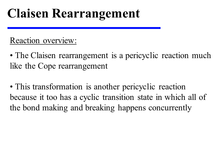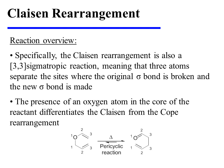The Claisen Rearrangement is a pericyclic reaction much like the Cope Rearrangement, and so you may be interested in watching the video on the Cope Rearrangement before proceeding further. This transformation is another pericyclic reaction because it too has a cyclic transition state in which all of the bond making and breaking happens concurrently. Specifically, the Claisen Rearrangement is also a 3-3-sigmatropic reaction, meaning that three atoms separate the sites where the original sigma bond is broken and the new sigma bond is made.